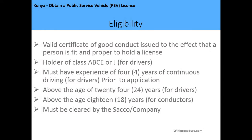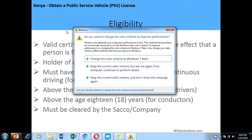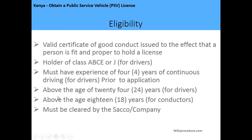One needs this document to gain employment in the public service transportation sector. For eligibility, one needs a valid Certificate of Good Conduct confirming the person is fit and proper to hold a PSV license. Drivers must hold a class A, B, C, or J license, have four years of continuous driving experience prior to application, and be above 24 years of age. Conductors must be above 18 years of age. Both drivers and conductors must be cleared by the SACCO or company in which they are employed.